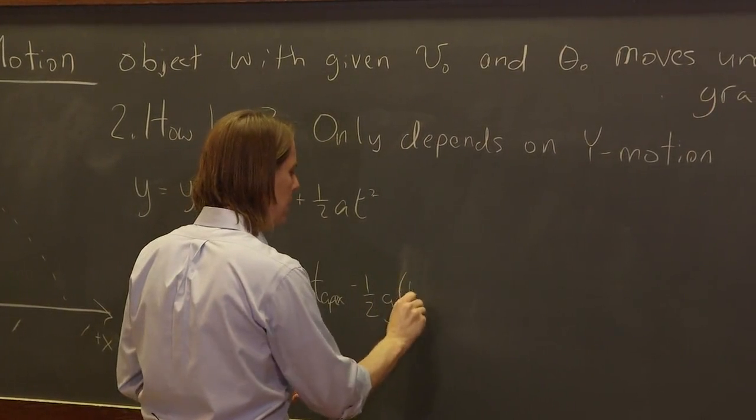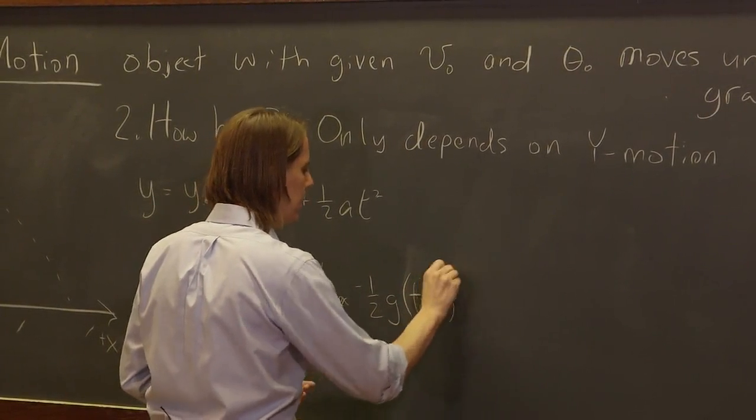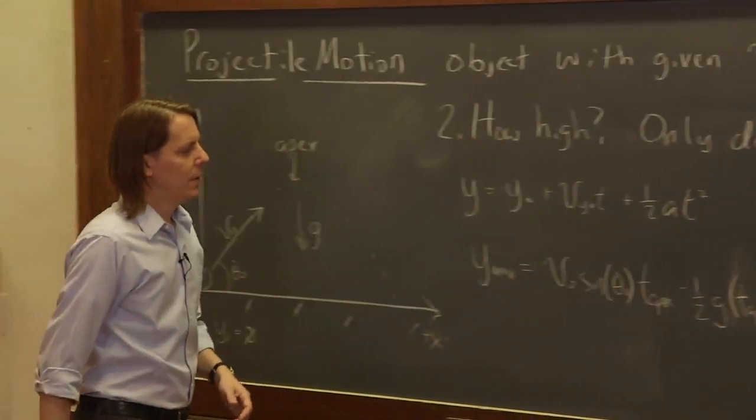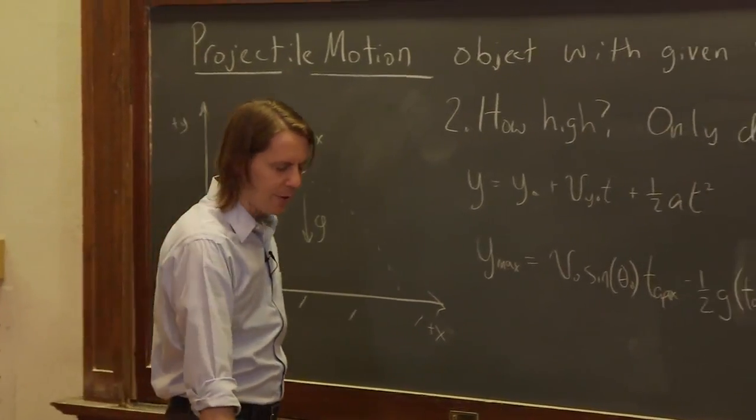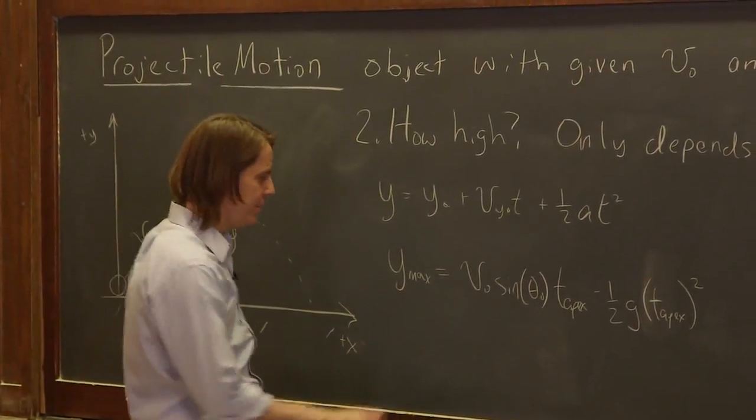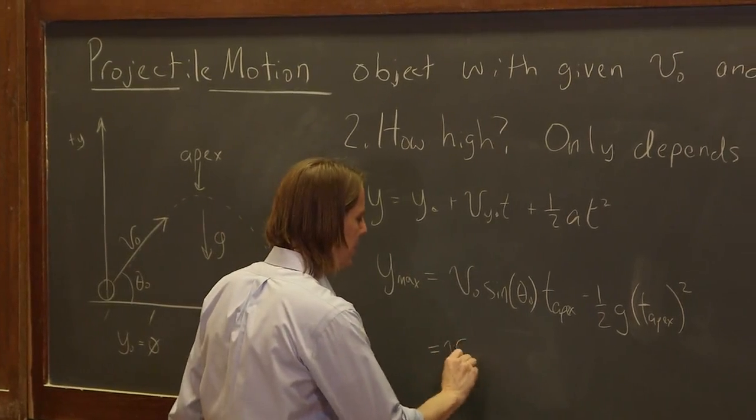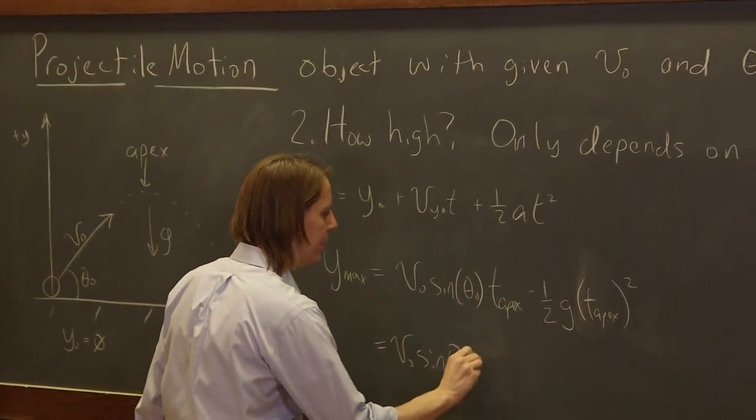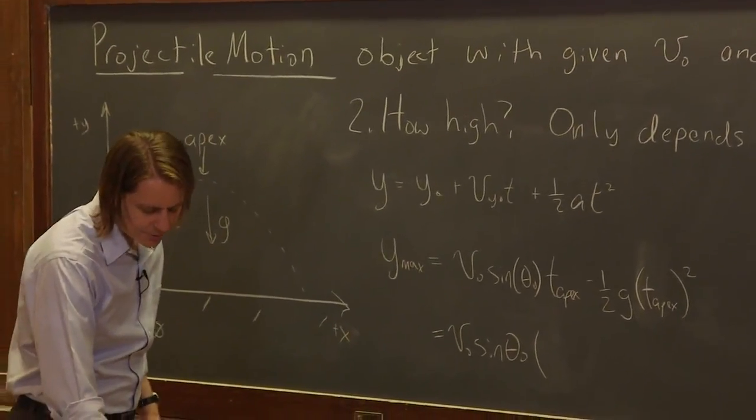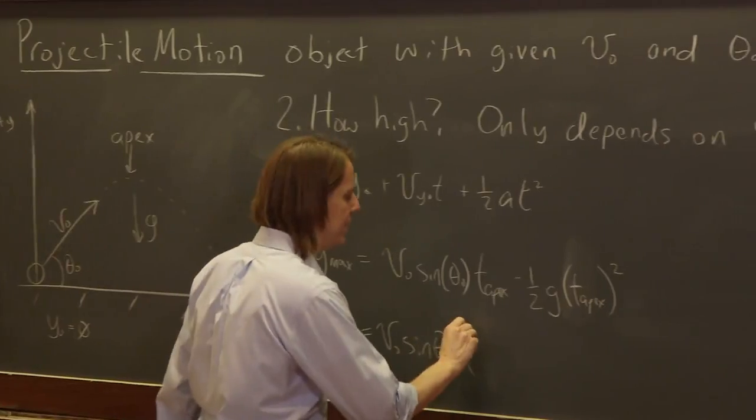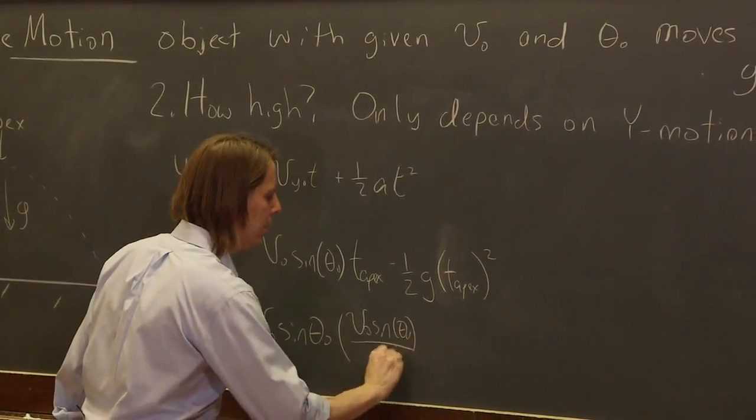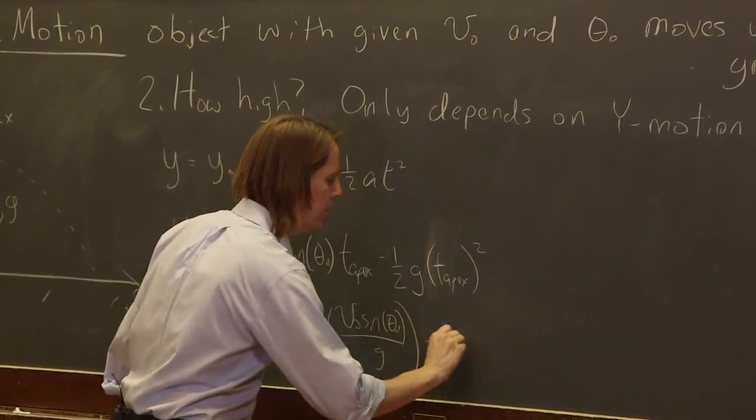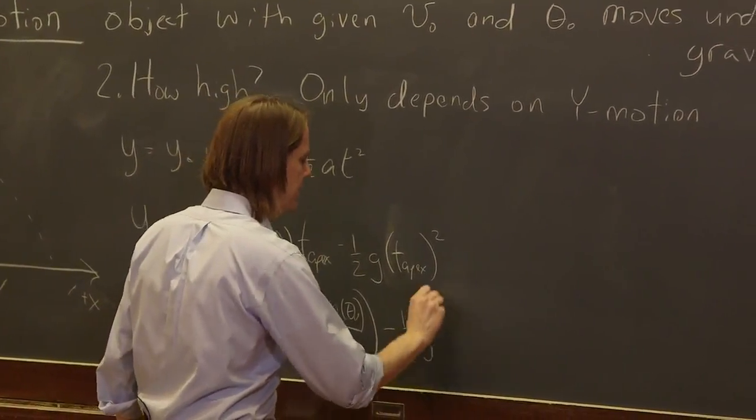Now if we go plugging in our t apex, it was v naught sine theta naught over g. So this equals v naught sine theta naught times t apex, which was v naught sine theta naught over g, minus one half g and then the whole thing squared: v naught squared sine squared theta naught over g squared.